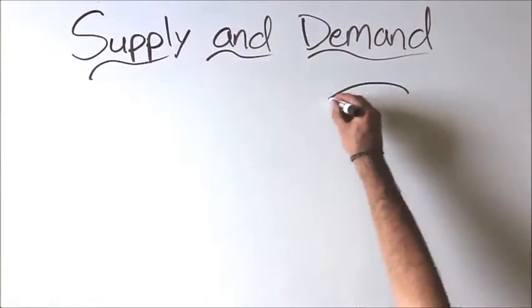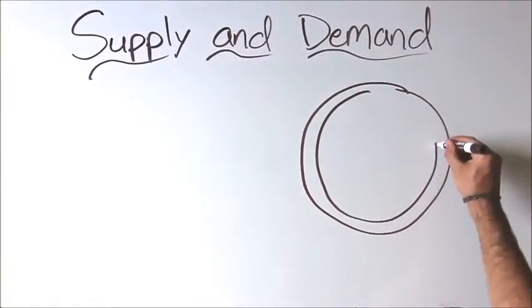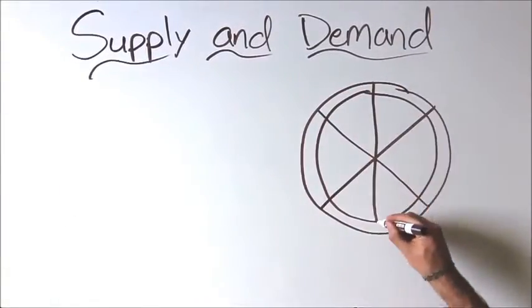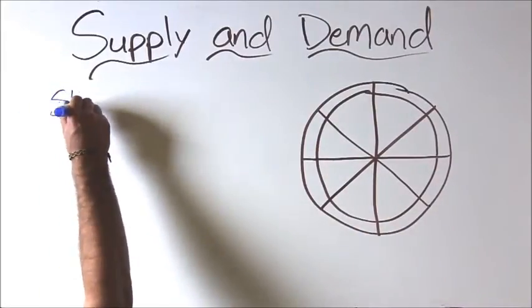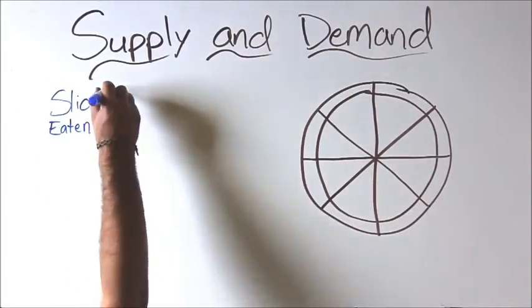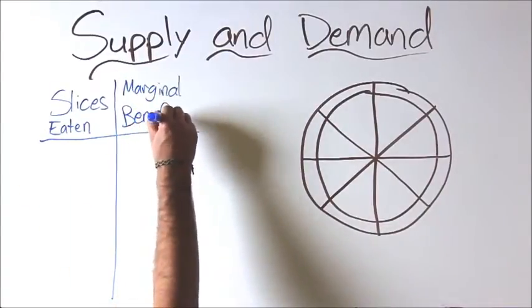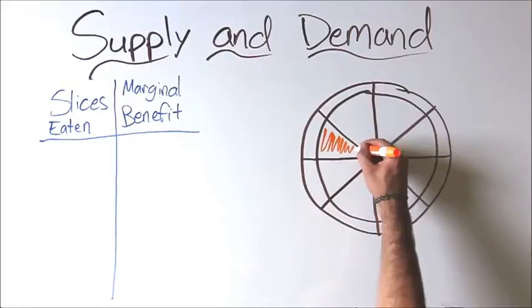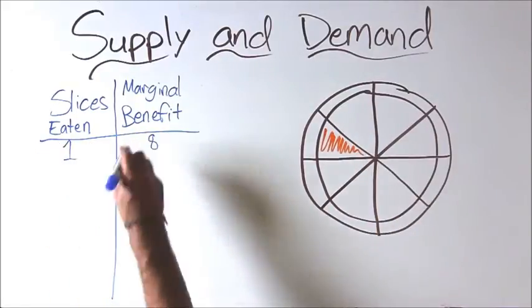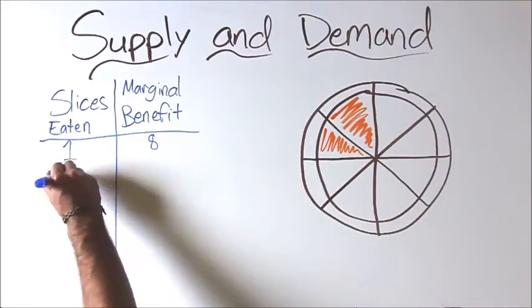To illustrate this concept, we will use marginal benefit to determine how many slices of pizza we should eat to maximize our benefit. Another quick note on terminology: in economics, we use the word benefit to quantify the amount of enjoyment or usefulness we get from something. We will compare the number of slices of pizza that we eat to how much additional or marginal benefit we get from each slice.